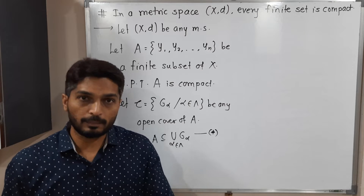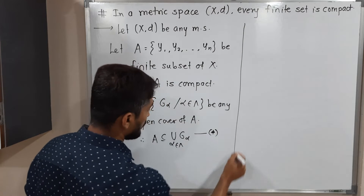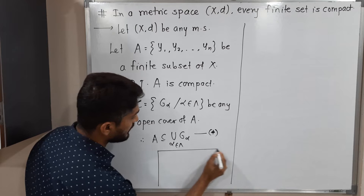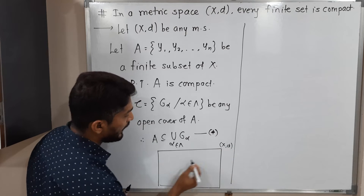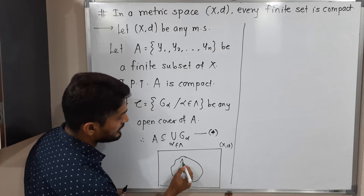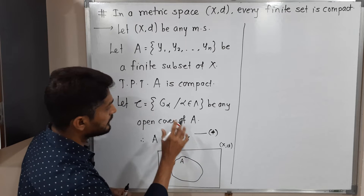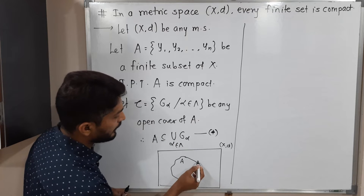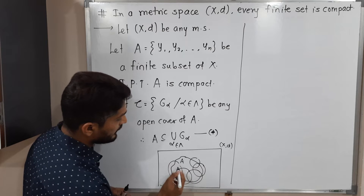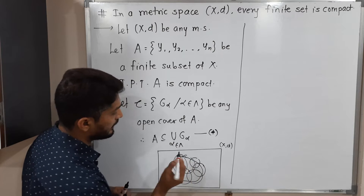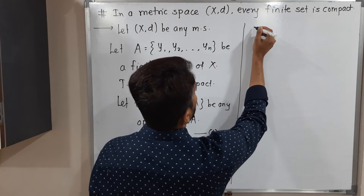Let me show this in a diagram. XD is a metric space; we have a subset A of X which is finite — this is very important information. Right now we have an open cover of A, meaning we have a collection of open sets such that their union covers A.